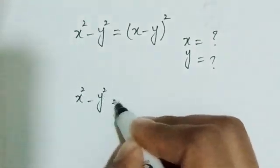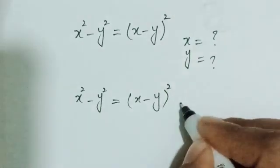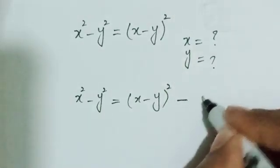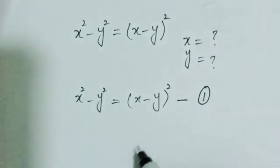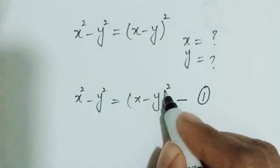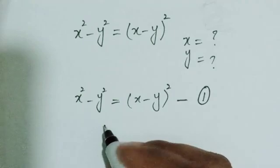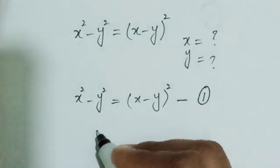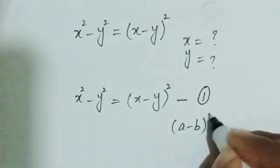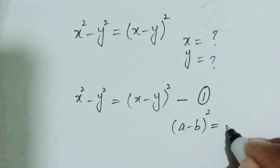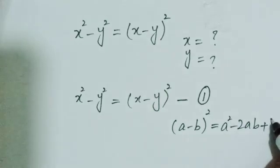I'm going to name this equation number one. I know that (x minus y) whole squared is our very familiar and famous identity: (a minus b) whole squared equals a squared minus 2ab plus b squared.